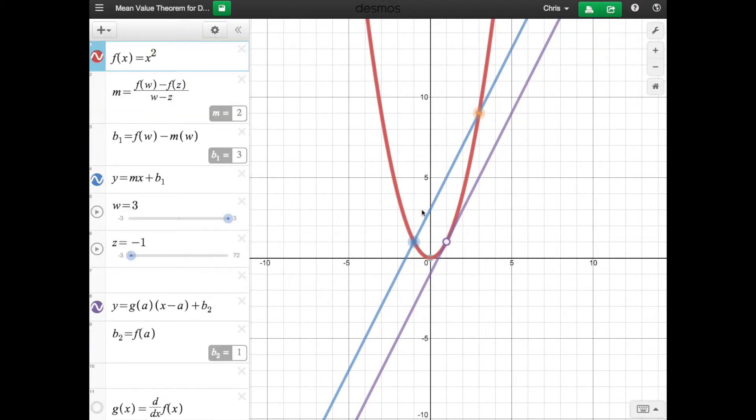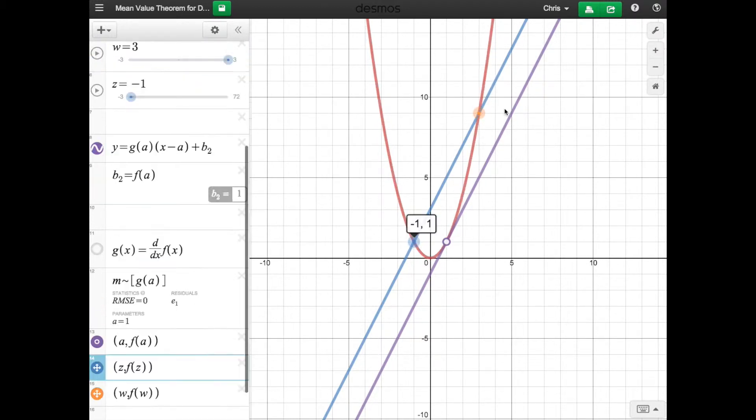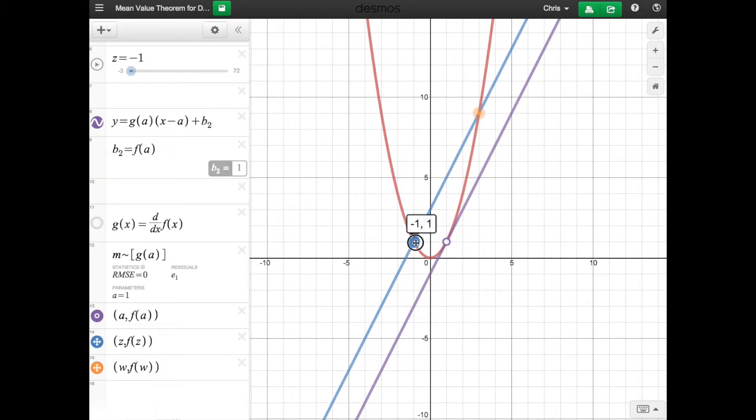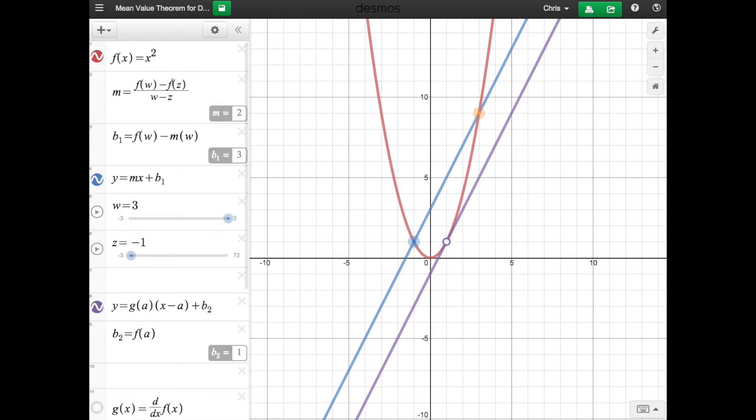You don't really need to know that. Just know that this part right here is making the equation of the secant line between this point and this point. That's all that first part is doing. And then here it's telling you the slope. The slope of this line is two and the y-intercept is three, as you can see it's three right there, and then it's graphing it out.